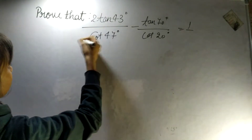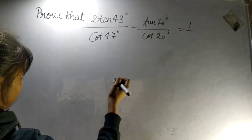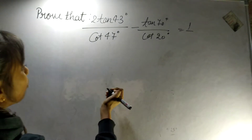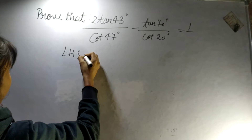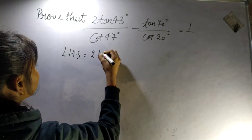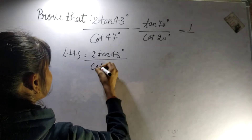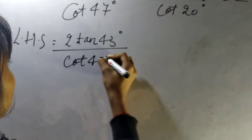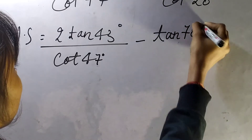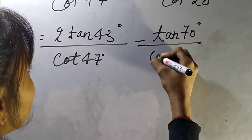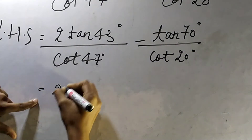Prove that 2·tan(43°)/cot(47°) − tan(70°)/cot(20°) = 1. So LHS is 2·tan(43°)/cot(47°) − tan(70°)/cot(20°).